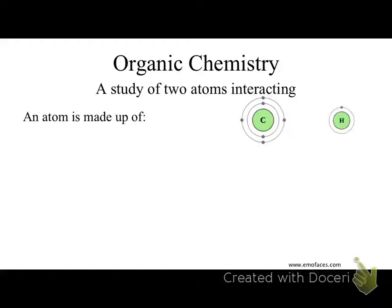Before we get into looking at those classifications, we should make sure everybody's on the same page as far as what makes an atom. What components are there in an atom? So we get our protons, neutrons, and our electrons.